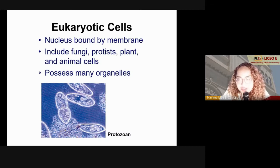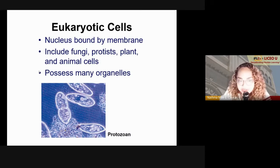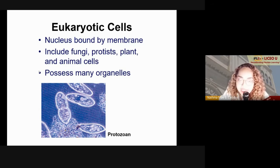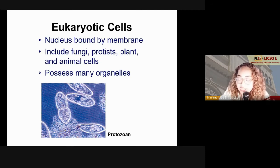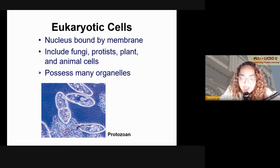Eukaryotic cells are more advanced than prokaryotic cells. Their nucleus is bound by a membrane, and they include fungi, protists, plants, and animal cells. We human beings are eukaryotes — our cells are eukaryotic.